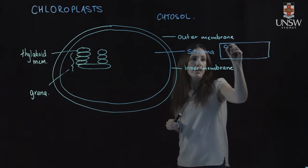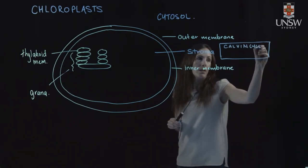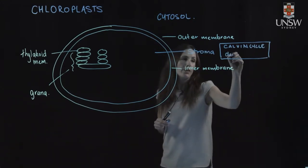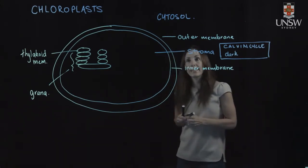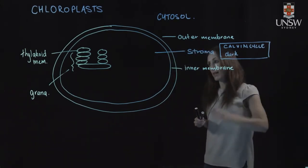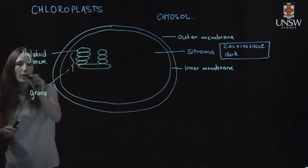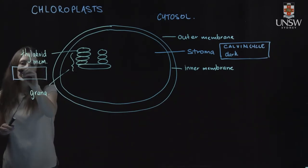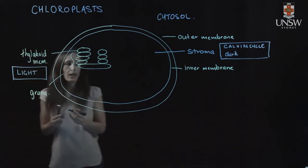And the stroma is where we have particular reactions of photosynthesis carried out. That is our Calvin cycle, which is also known as the dark reactions of photosynthesis, or sometimes we call it the light independent reactions of photosynthesis. And then over here where we have our thylakoid membrane, this is within the membrane where our light reactions of photosynthesis happen within that membrane system.